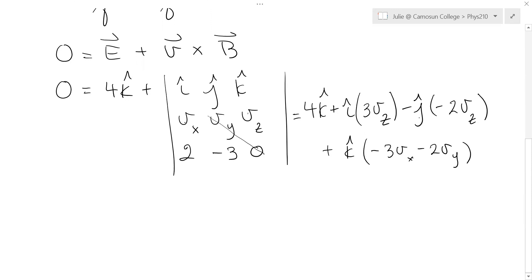There, the i hat and j hat components have to add to zero, because if on the left it's zero, it means every component has to be zero, which tells us that Vz must be zero. That takes care of both the i and j components.